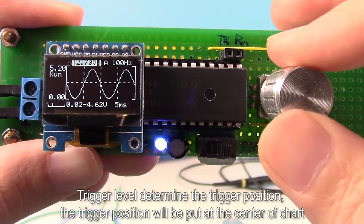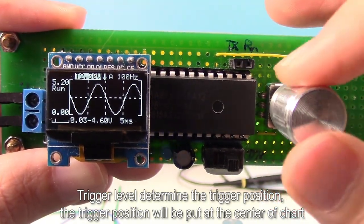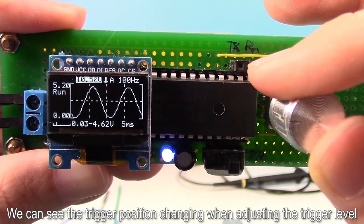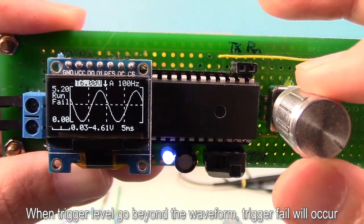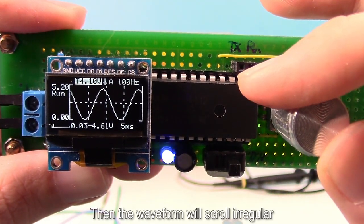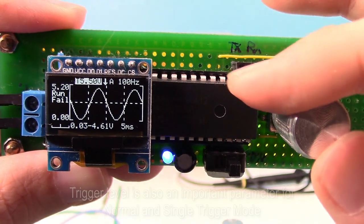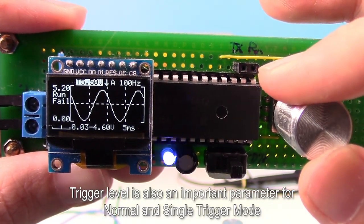Trigger level determines the trigger position. Trigger position will be put at the center of chart. We can see the trigger position changing when adjusting the trigger level. When trigger level goes beyond waveform, trigger fail will occur. Then the waveform will scroll irregularly. Trigger level is also an important parameter for normal and single trigger mode.